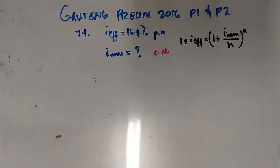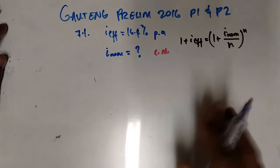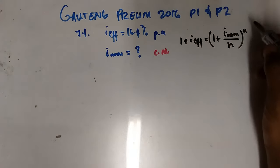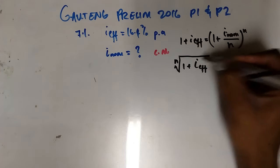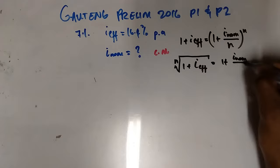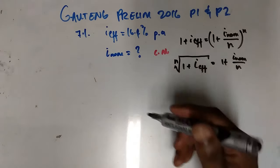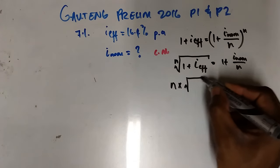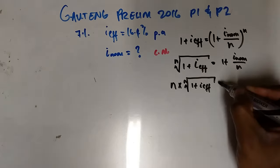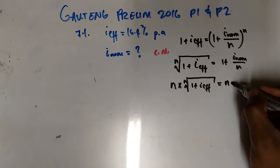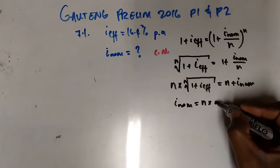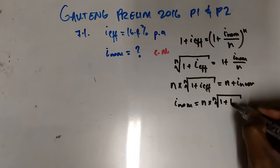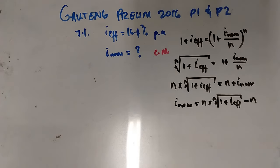What I usually do with such problems is make i_nominal the subject of the formula, so I don't lose track of what I'm doing. I take the nth root on both sides: the nth root of (1 + i_effective) = (1 + i_nominal / n). Multiplying by n throughout gives: i_nominal = n × [nth root of (1 + i_effective)] − n.